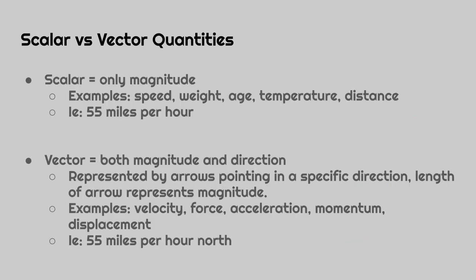Examples of magnitude: speed, age, temperature, distance. Vector: both magnitude and direction, represented by arrows in a specific direction. Length of the arrow represents how big it is or the magnitude. Examples: velocity, force, acceleration, momentum, displacement. 55 miles per hour north is a vector.